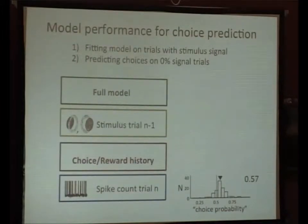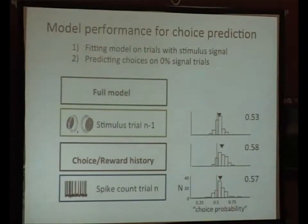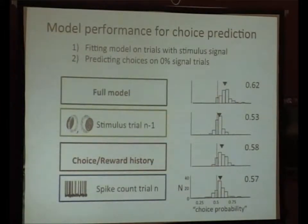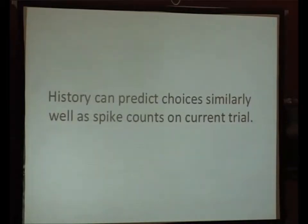Looking at how choice and reward history influences choices: the choice probability based on choice history alone is about 0.58. When I use only the stimulus on the previous trial, the choice probability is 0.53. With the full model it's 0.62. I'm going to focus mostly on this component — yes, we do see that choice and reward history predicts choices, and it does so similarly well as the spike counts on the current trial. Now we've established this behavioral effect, so we can do essentially the same analysis predicting spikes on the current trial, to ask whether history also affects spikes.